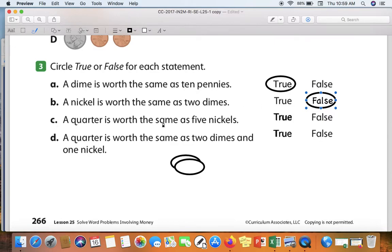A quarter is worth the same as five nickels. Picture five nickels. Each nickel is worth five cents. So we're going to skip count by five, five times. Count with me: Five, ten, fifteen, twenty, twenty-five. They're saying a quarter is worth twenty-five cents. That is true.